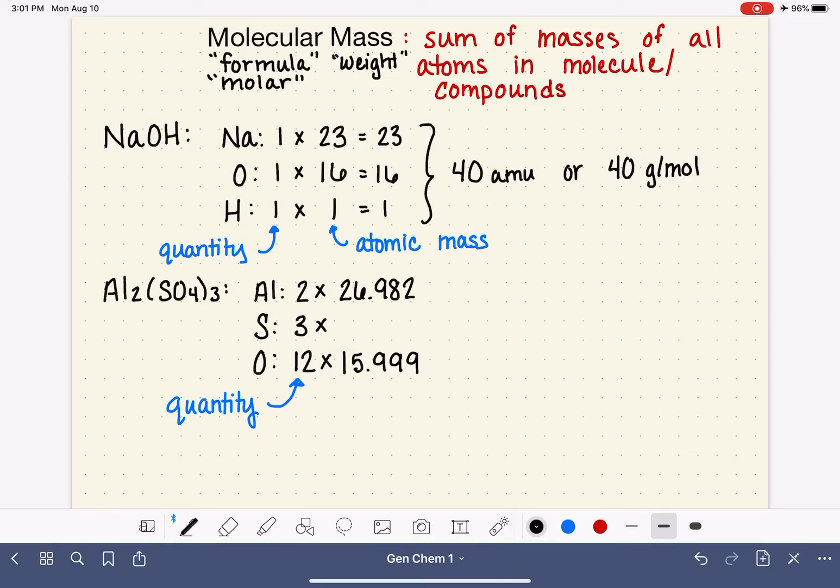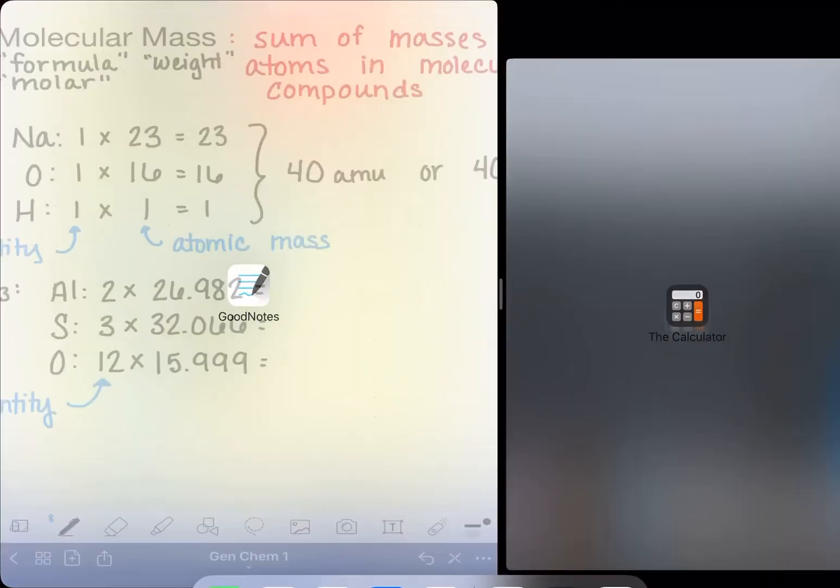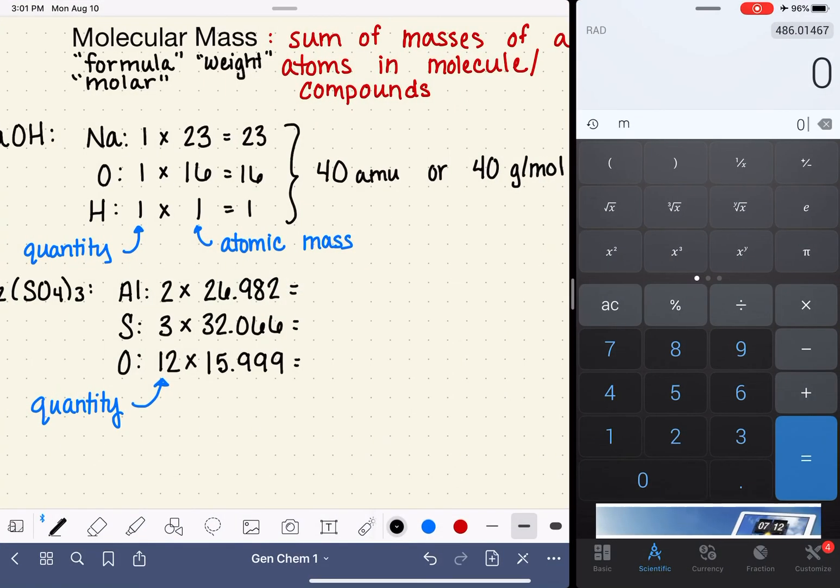26.982, 32.066. It is possible that I remembered these numbers incorrectly, and if I did, just ignore that. So now we are going to work the math out on these multiplications. I've got a calculator here that we're going to use, and then we'll add up altogether what the weight is.